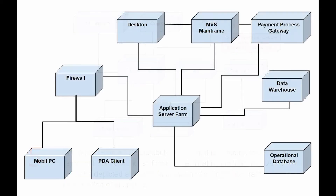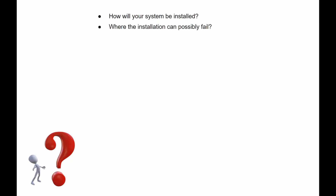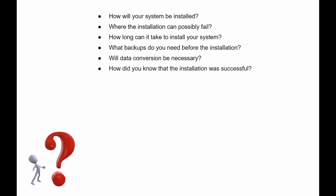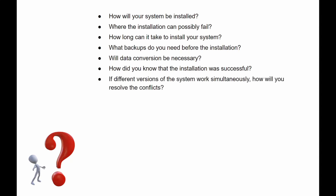When you develop a deployment plan for your company, you might discover that you don't know where to start and what to focus on. The following checklist can give you some ideas for planning your deployment. How will your system be installed? Who will install it? How long will it take? Where can the installation possibly fail? What backups do you need before the installation? Will data conversion be necessary? How will you know that the installation was successful? If different versions of the system work simultaneously, how will you resolve the conflicts? What physical sites do you need to deploy and in what order?